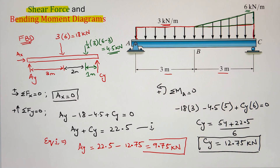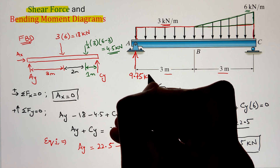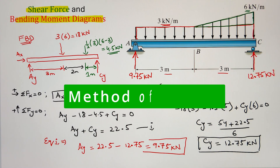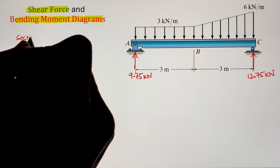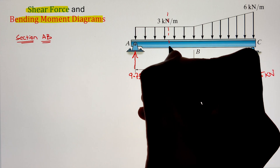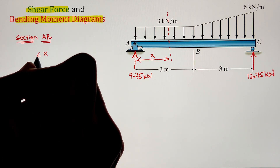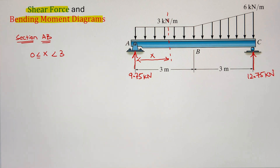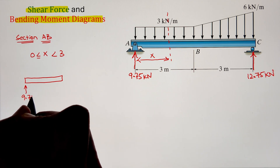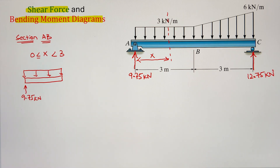With both support reactions known, we draw the shear force and bending moment diagrams using the method of sections. Due to discontinuities, we consider two sections: A to B, and B to C. For section AB, we make a cut at distance x from point A, where x ranges from 0 to 3. The free body diagram shows the support reaction of 9.75 kN upward and the rectangular distributed load of 3 kN/m downward.